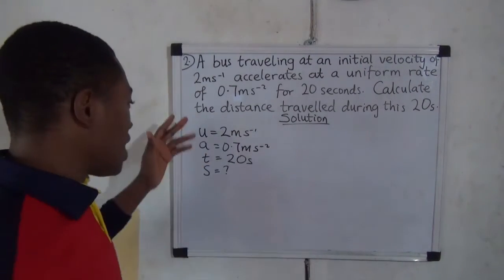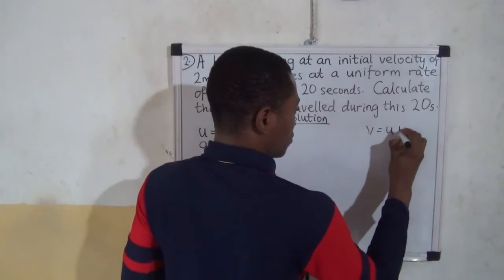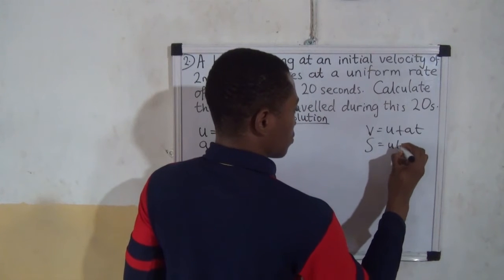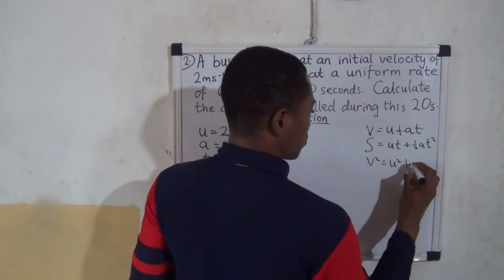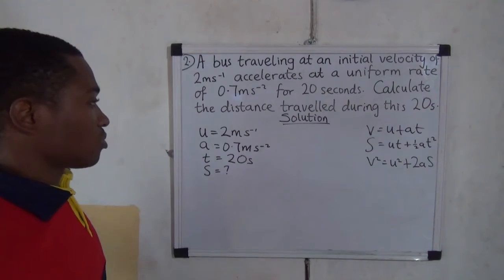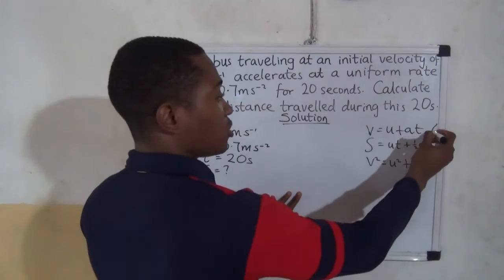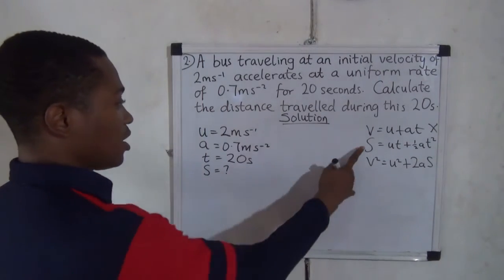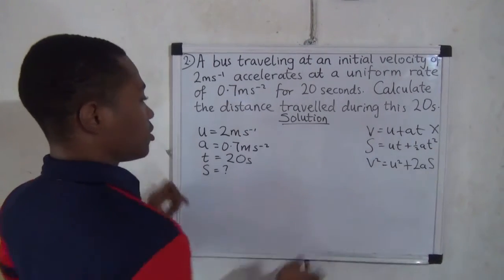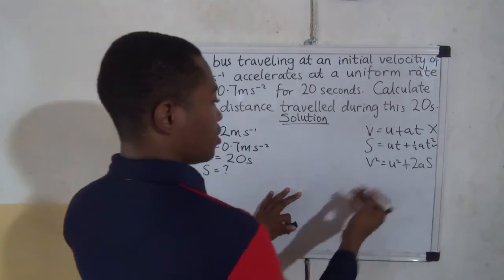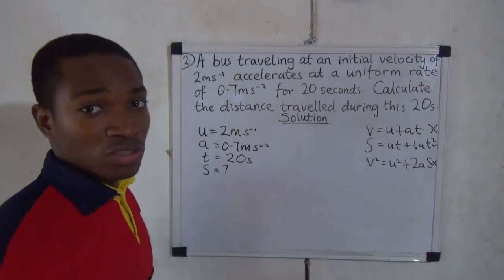Which equation of rectilinear motion has these parameters? The first equation has V, which we don't have here, so it won't work. The second equation S = UT + ½AT² has S, U, T, and A — all matching our parameters — so it will work. The third equation has V, which we don't have, so it won't work. The second equation is the one we will use.